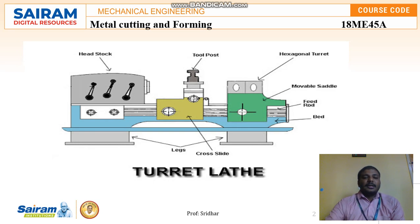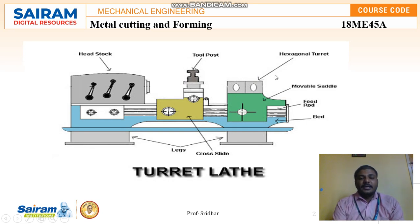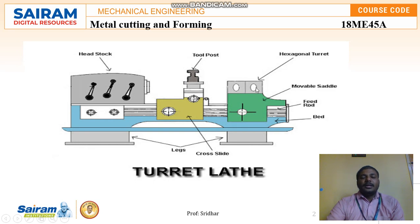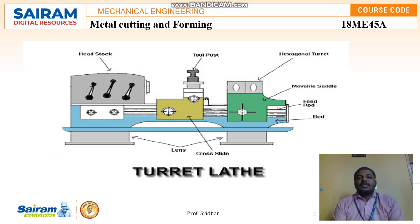The major difference between the normal lathe and turret lathe is that in a normal lathe the workpiece is held rigidly between the headstock and the tailstock. Here, there is no tailstock. Instead, we have a hexagonal turret. The workholding device is placed on the hexagonal turret, and support is given from the hexagonal turret on one end. From the other end, the headstock holds the workpiece using three or four jaws.